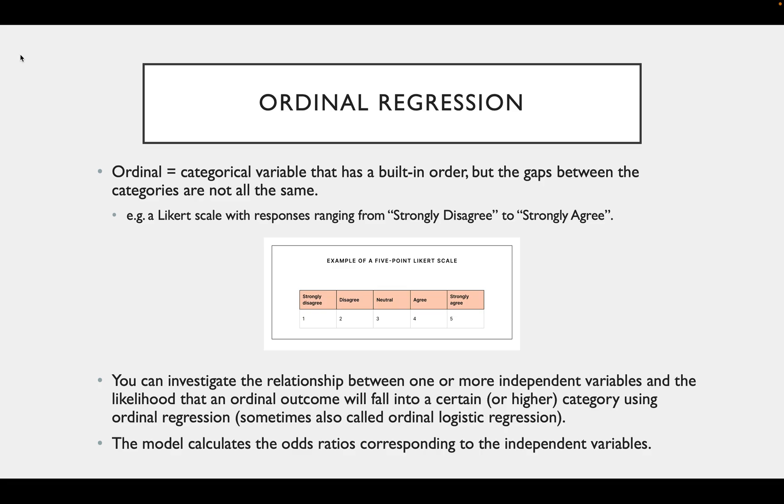Ordinal regressions are used to investigate the relationship between one or more independent variables and the likelihood that an ordinal outcome will fall into a certain or higher category. The model calculates the odds ratios corresponding to the independent variables.